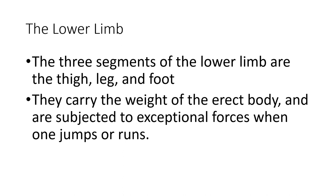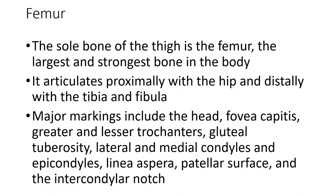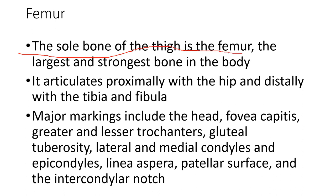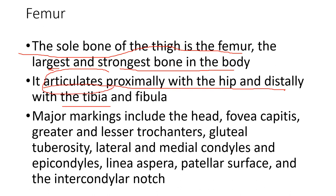The lower limb has three segments: the thigh, the leg, and the foot. The thigh contains the femur; the leg has two bones, the tibia and the fibula; and then the foot has many bones. They carry the weight of the erect body and are subjected to exceptional forces when someone jumps or runs. The femur is the sole bone of the thigh — the largest and strongest bone in the body. It articulates proximally with the hip and distally with the tibia at the femoral condyles on top of the tibial plateau.